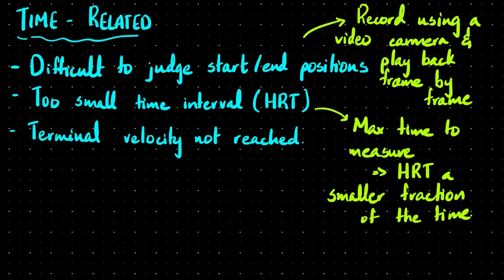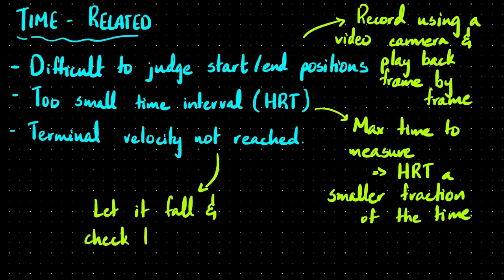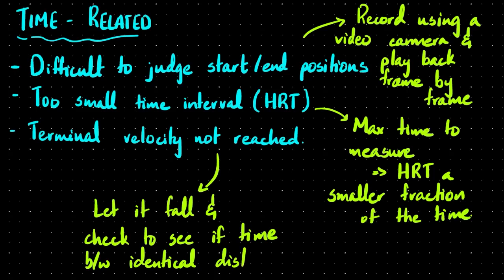For terminal velocity experiments, to ensure that terminal velocity is actually reached, let the object fall and check whether the time between identical distances is constant. For example, if the object takes one second to fall 8 cm, in the following second it should also fall 8 cm — confirming terminal velocity.